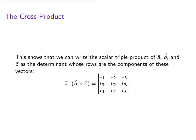So here we go. This is a super nice formula. a dot b cross c is just this third order determinant.